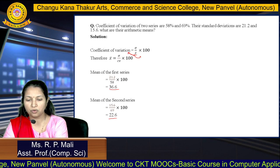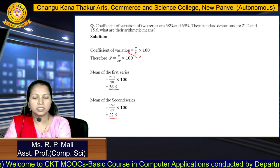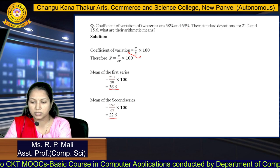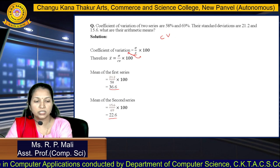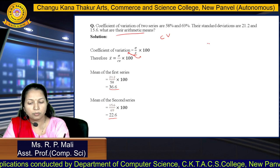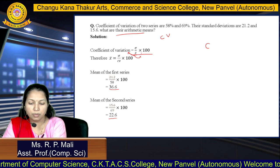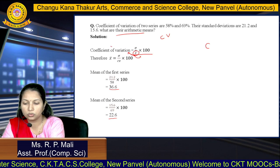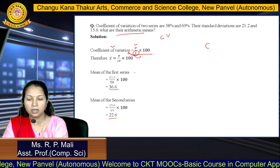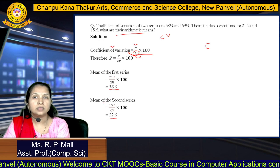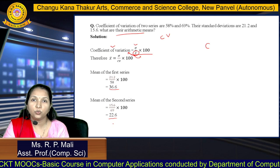Another practice question: the coefficients of variation of two series are 58.58% and 49.69%. The standard deviations are given and we need to find the arithmetic mean. Using CV = (σ/X̄) × 100, we rearrange to find X̄. For the first series the answer is 36.6, and for the second series the answer is 22.6.